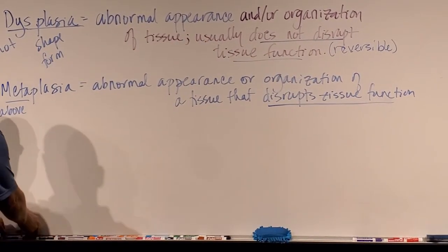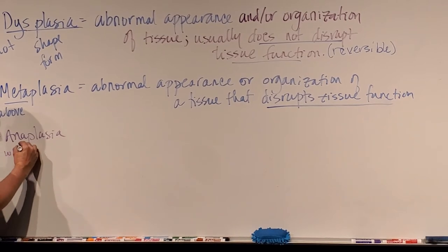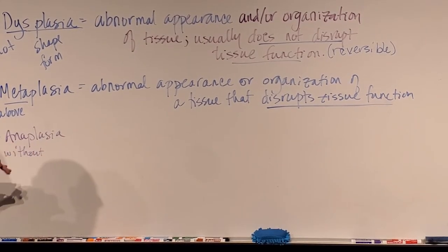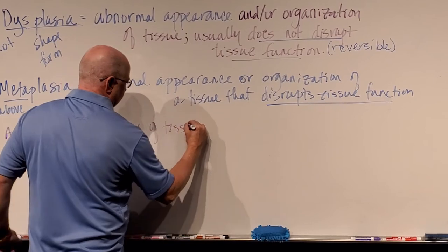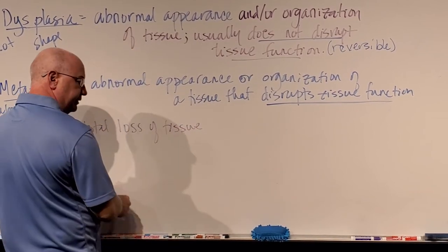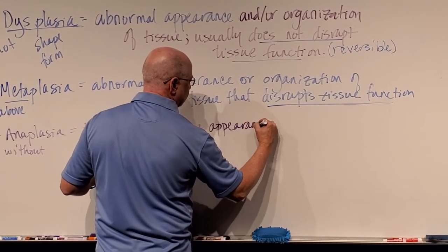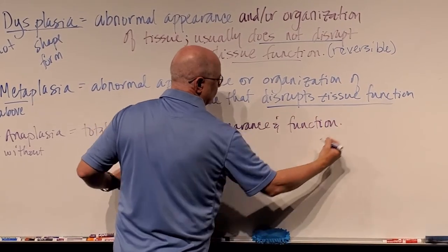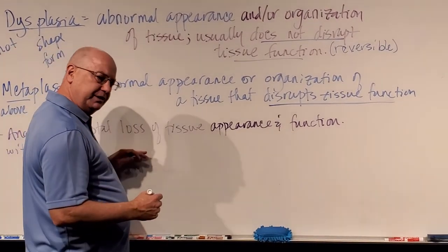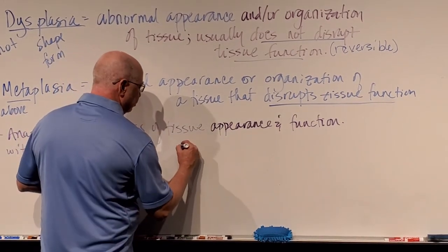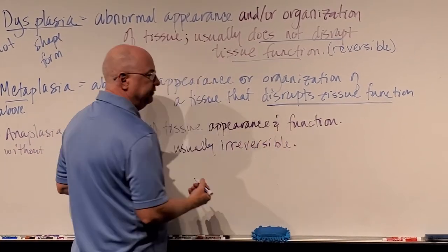The worst of the three is called anaplasia. 'Ana' means without or not. This means you have a total loss of tissue appearance and function. The tissue is completely unrecognizable. It disrupts the appearance and completely breaks down the function. It is usually irreversible without medical intervention.